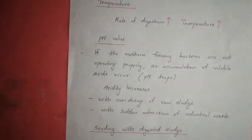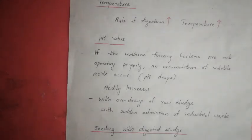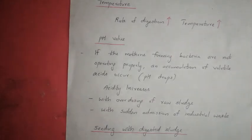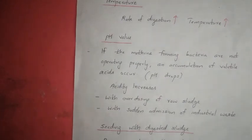This acidity increases due to reasons such as overdosing of raw sludge, sudden admission of industrial waste, or overall withdrawal of digested sludge. Due to these reasons the pH value will drop.